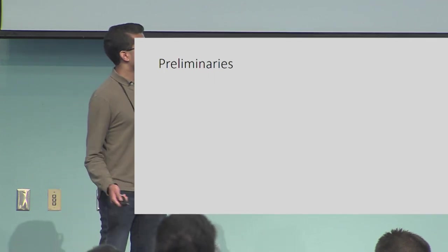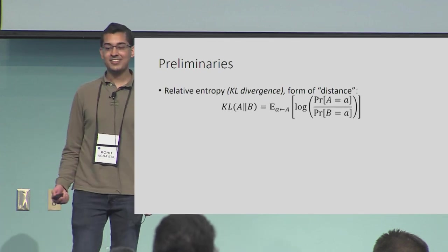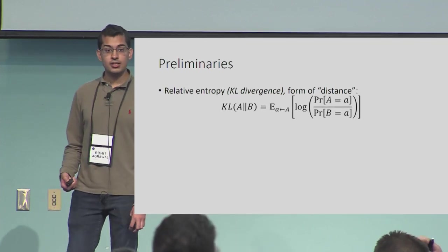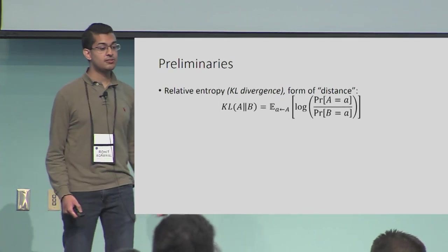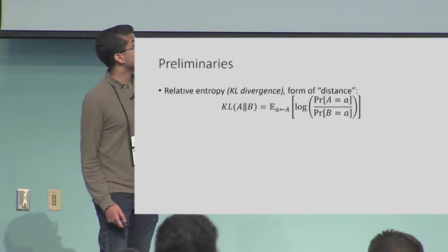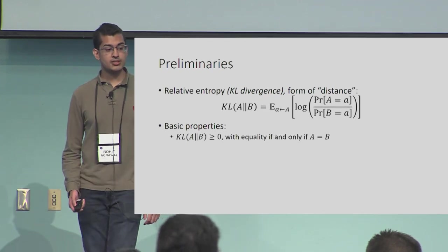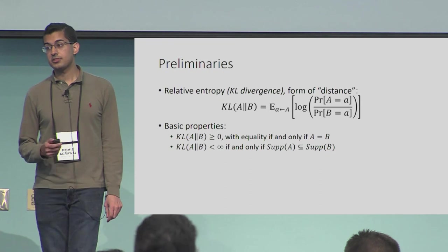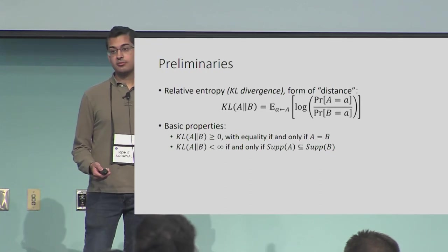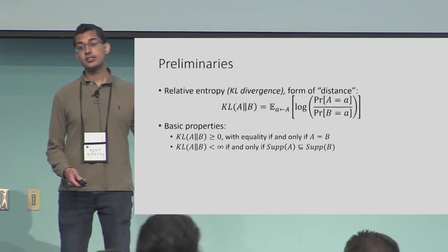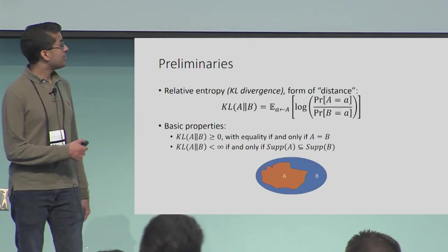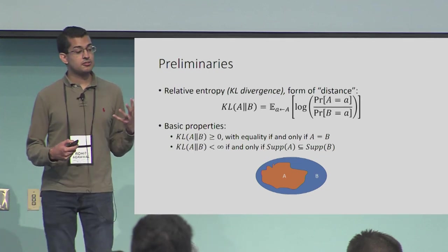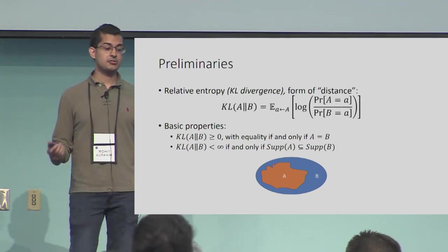The talk mentioned KL divergence; the new notion is called hardness in relative entropy, so let's define relative entropy or KL divergence — a form of distance between probability distributions. The relative entropy of A with respect to B is the expected log ratio of the probability of A over the probability of B, where the expectation is over the distribution on the left. Basic properties: it is non-negative with equality if and only if the distributions coincide; it is finite if and only if the support of A is contained in the support of B. If B is uniform over its support, then the relative entropy of A with respect to B is minimized when A's support is contained in B's, is as large as possible, and is as close to uniform on that support as possible.